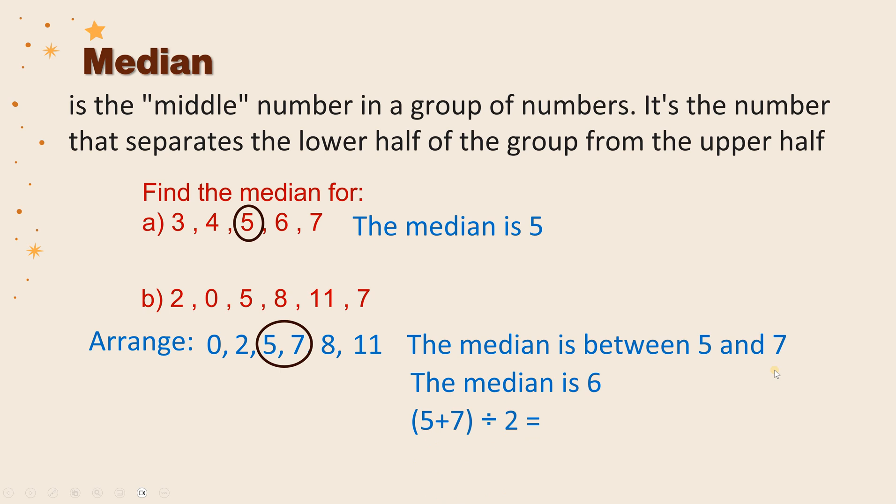Then I will divide the answer by 2. 5 plus 7 equals 13. Divided by 2 equals 6. This is the same number, right? So now we have two ways to find the median. When I have odd number of data, it will be in the center of data. But when I have even number of data, I will find out that we have two numbers in the center.